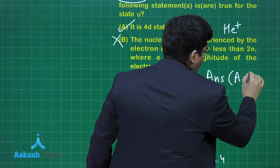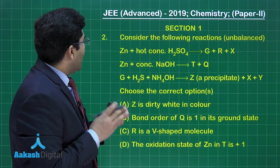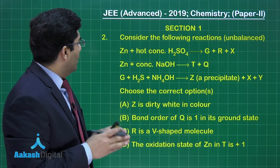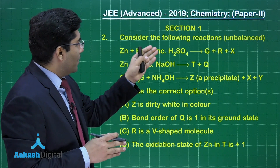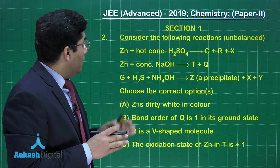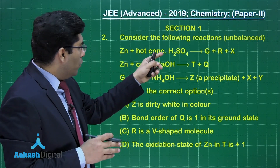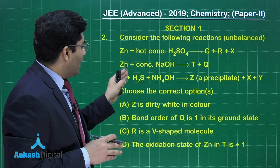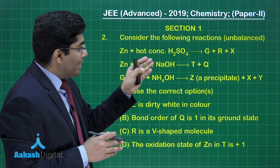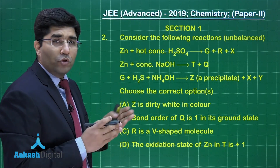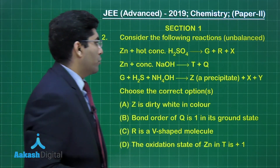So our answer for question 1 is options (A) and (C). Let's move on to the next question. This question asks us to consider the following unbalanced reactions: zinc with hot concentrated H2SO4 gives products G, R, and X; zinc with concentrated NaOH gives T and Q; and G from the first reaction with H2S and NH4OH gives precipitate Z, plus X and Y.